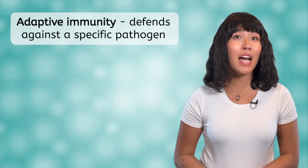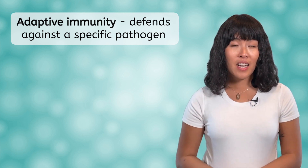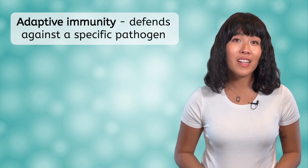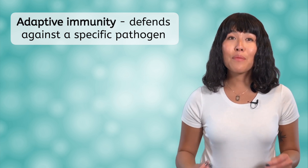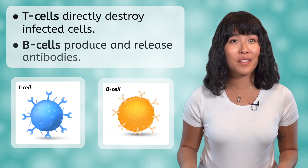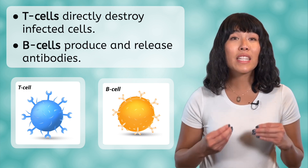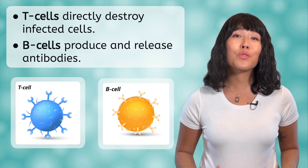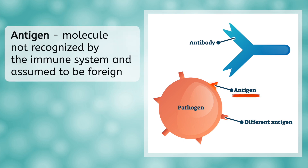Adaptive immunity is a type of immune response that is specifically tailored to defend against a particular pathogen. Unlike the nonspecific strategies we've talked about so far, it can provide longer-lasting protection against specific pathogens. The adaptive immune response is carried out by two main types of white blood cells — T-cells and B-cells, which are both types of lymphocytes. T-cells are responsible for directly destroying infected cells, while B-cells produce and release antibodies. The response begins with an antigen — a molecule that is not recognized by the immune system and assumed to be foreign to the body.